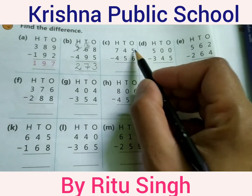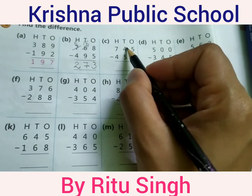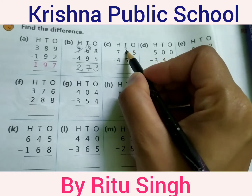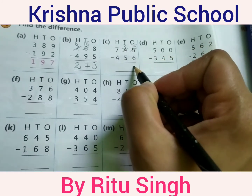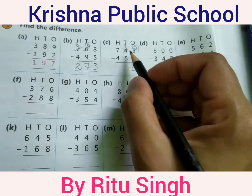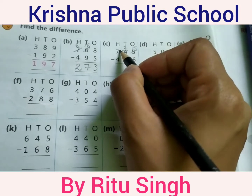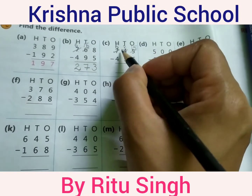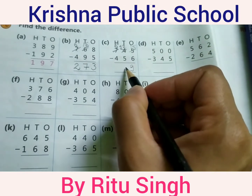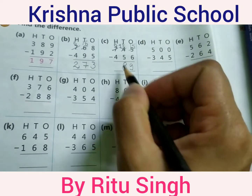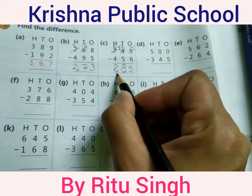Next: 5 minus 6 — 5 is a smaller digit compared to 6. Borrow from 4, making it 15. 15 minus 6 equals 9. 3 minus 5 — 3 is a smaller digit compared to 5. Borrow from 7, making it 13. 13 minus 5 equals 8. 6 minus 4 equals 2. Your answer is 289.